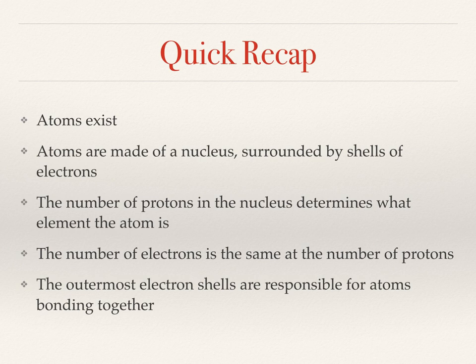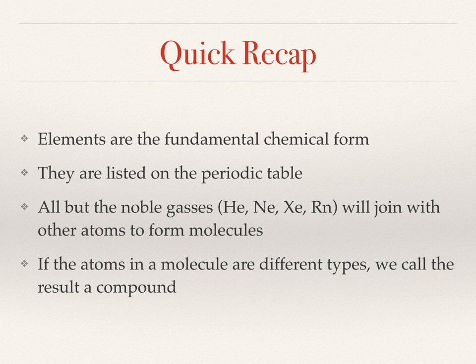A quick recap on the previous video. We know that atoms exist and they are made of a nucleus surrounded by shells of electrons, and we also know it's the outermost shell of electrons that's responsible for bonding atoms together. Atoms of different types are called elements and these are all listed on the periodic table. All but the elements known as noble gases will readily join with other atoms to form molecules. If atoms of different types or different elements join together we get a compound. All compounds are molecules but not all molecules are compounds.